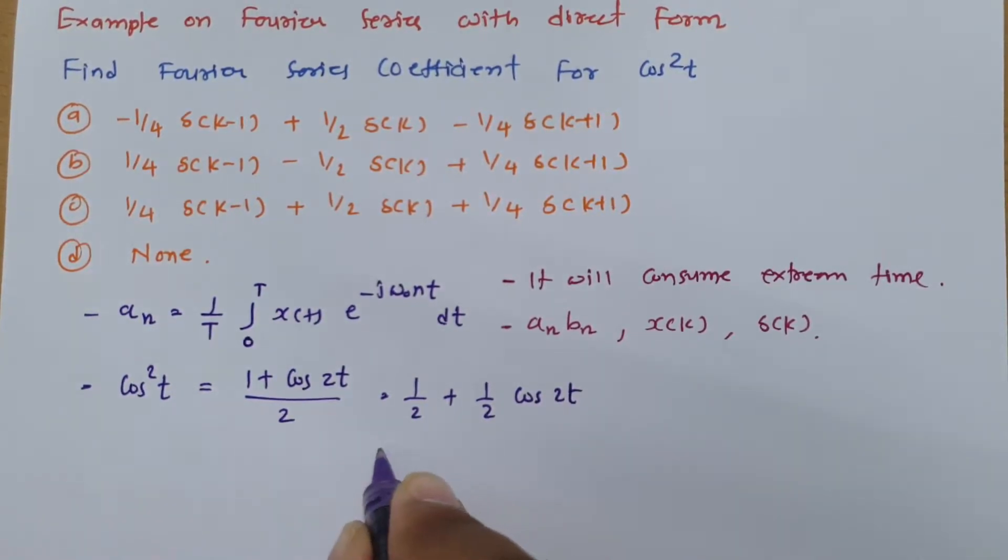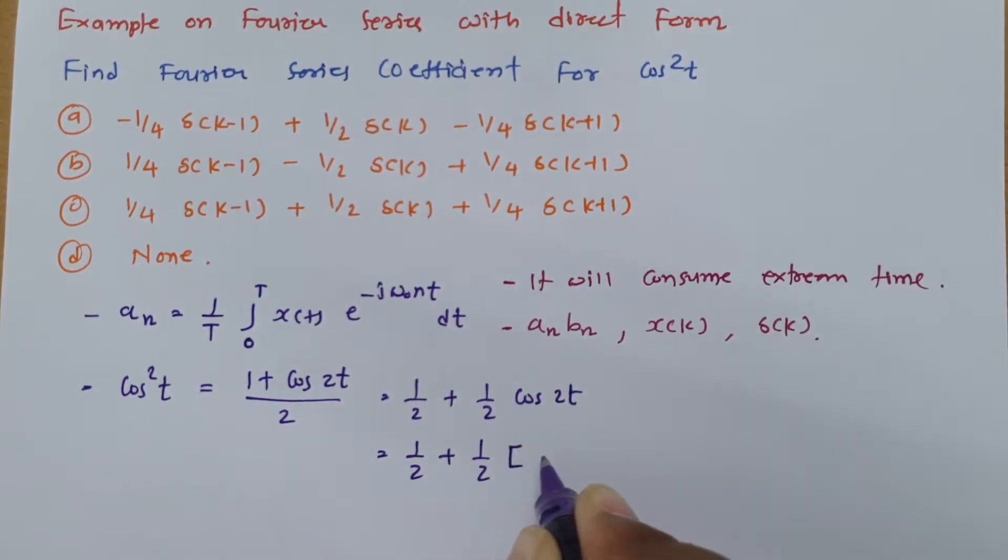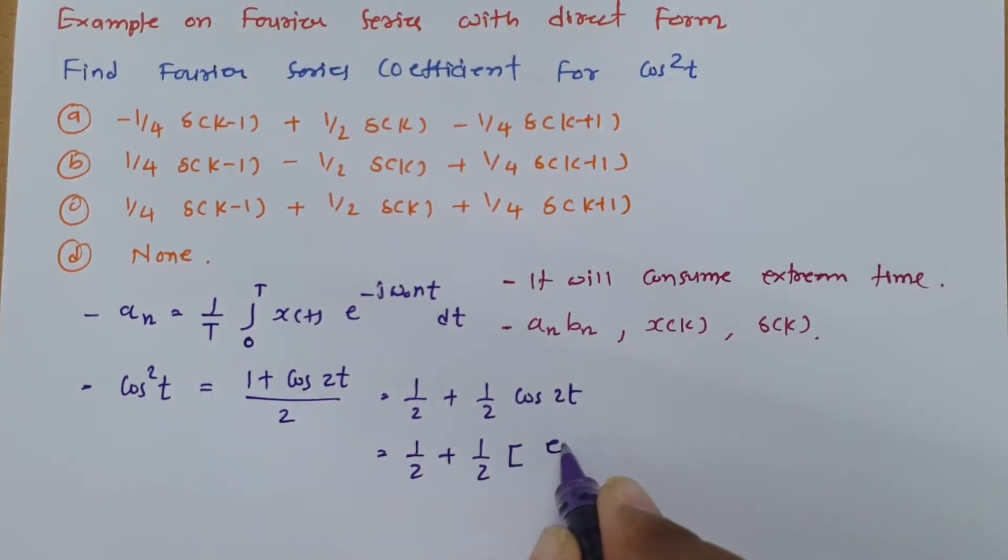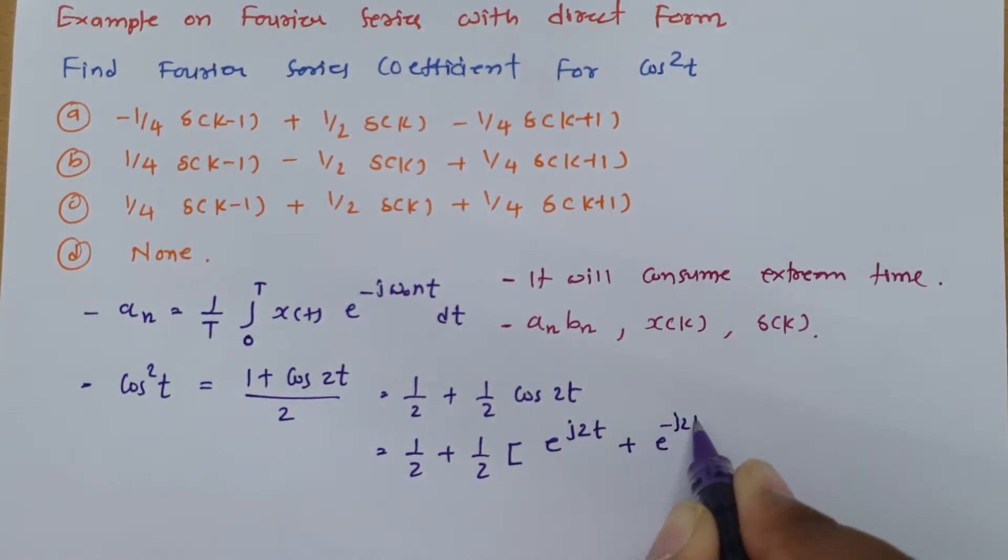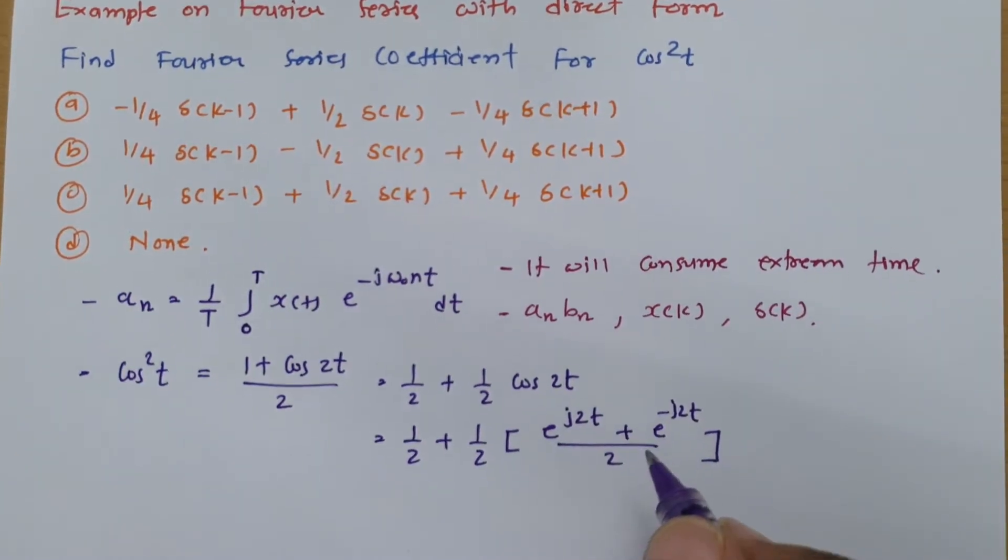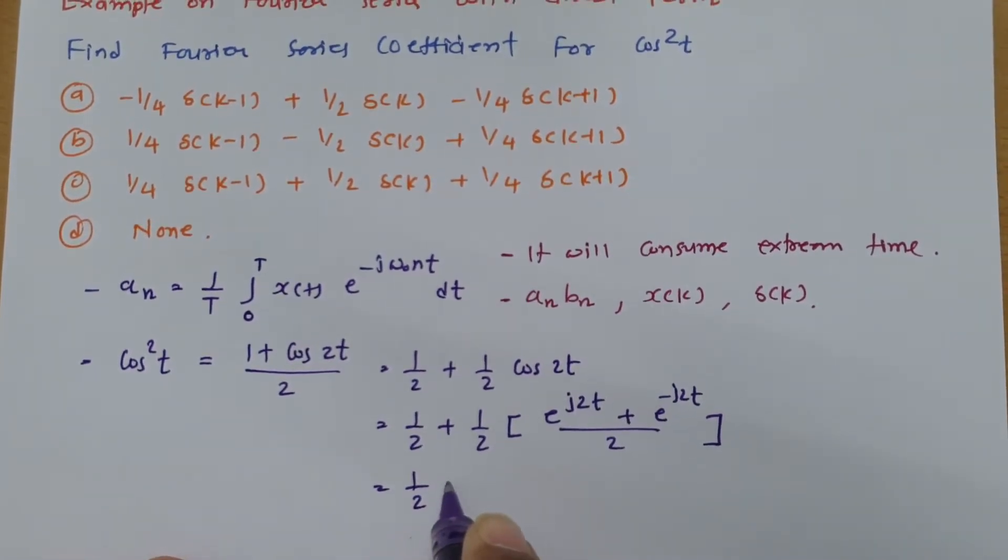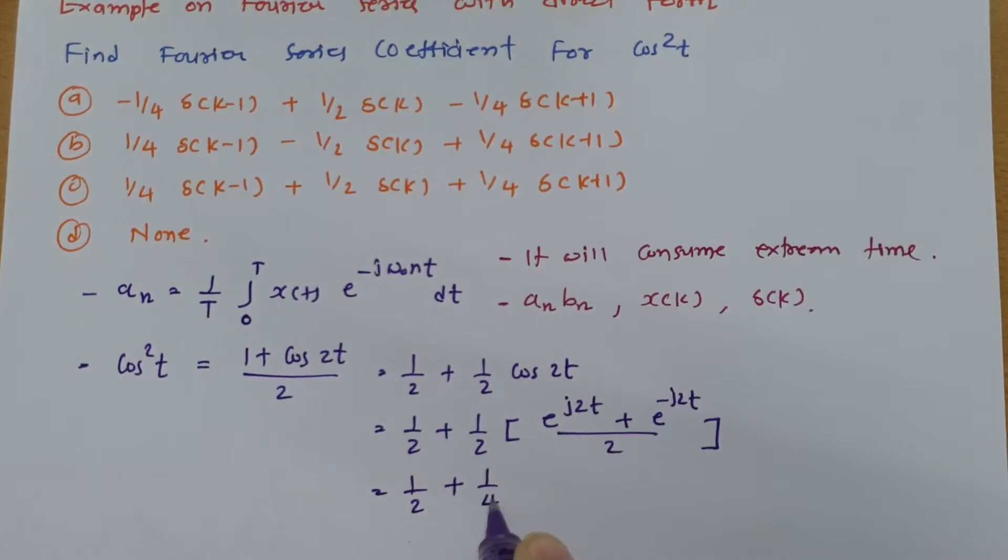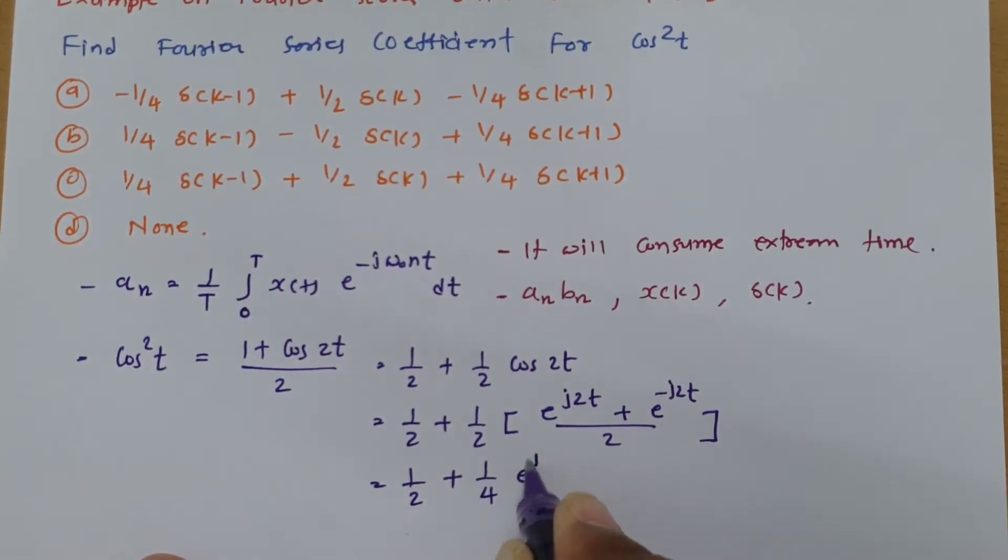So as we know, this is what? Again e to the power j2t plus e to the power minus j2t by 2. So this expansion will be further deals with 1 by 2 plus 1 by 4 into e to the power j2t plus 1 by 4 e to the power minus j2t.